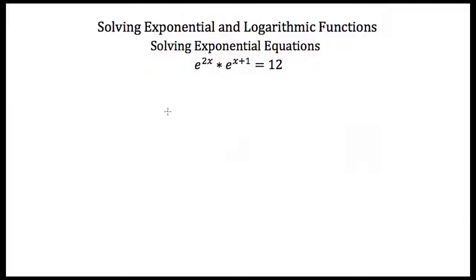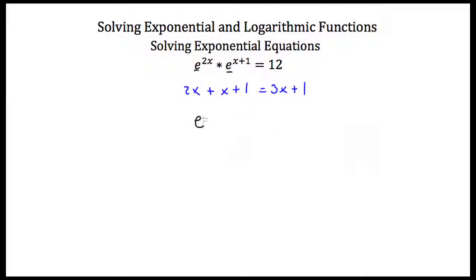Now let's try solving an exponential equation that has multiple exponential terms. Here I have e to the 2x times e to the x plus 1 equal to 12. Normally I would convert to a log, but I have two exponential terms multiplied together. I need to combine my exponents first. Since both have base e, I can add the exponents: 2x plus x plus 1 gives 3x plus 1. So now I have e to the 3x plus 1 equal to 12.